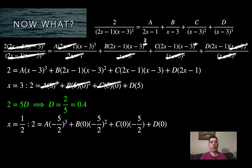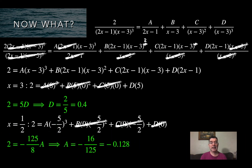Now I plug in x equals one half. When I do that, any term with 2x minus 1 as a factor goes away, because 2 times one half minus 1 equals 0. So I can solve for A, and A equals negative 16 over 125, which is negative 0.128.